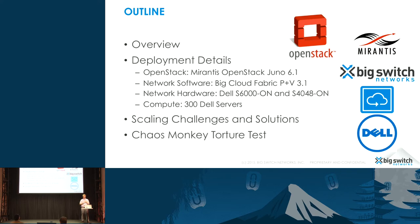What I'm going to talk about today is a large scale-out testbed that we did with our partners Mirantis on the OpenStack side, as well as Dell, both for the compute and the physical hardware, running the Big Switch software. We scaled that out to 300 nodes running Neutron, and we made it work.